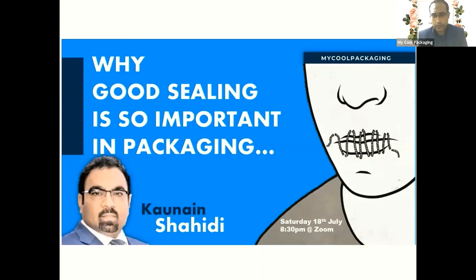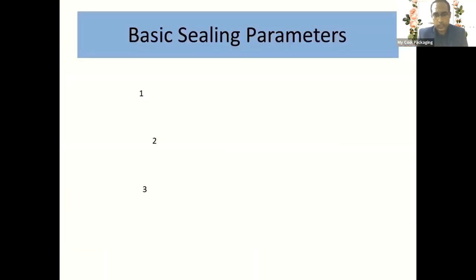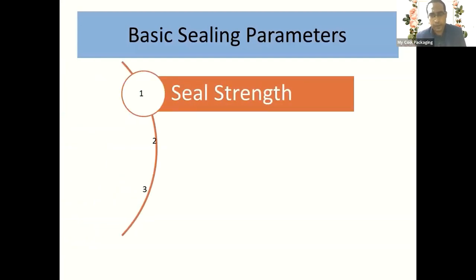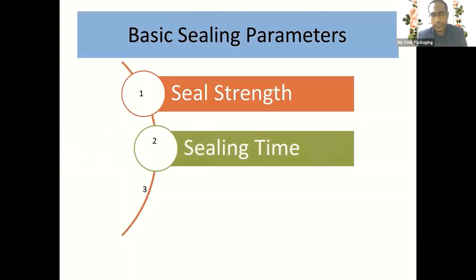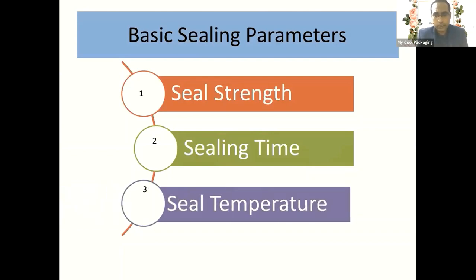This topic is important from a machinery point of view, from a packaging material point of view, from a purchase point of view, and from a product launch point of view. This property is absolutely critical. When you talk about basic sealing parameters, there are three: first, seal strength — the strength has to be as per our equipment; second, sealing time, also called seal initiation temperature; and third, seal temperature — at what temperature which type of film or coating can be sealed.